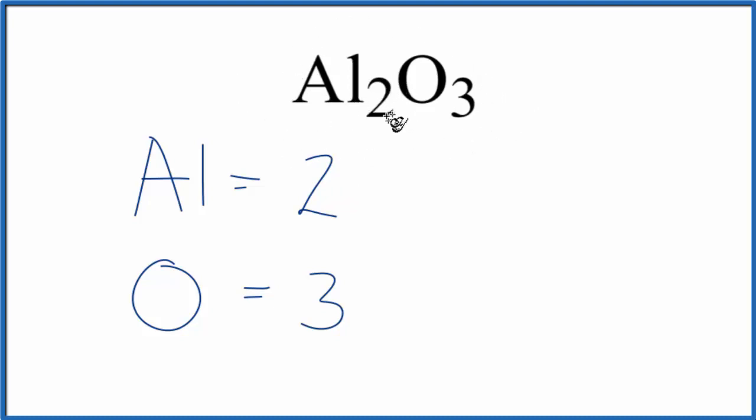If you were asked to figure out how many, say, oxygen atoms there were in one mole of aluminum oxide, you would just take the three and multiply that by Avogadro's number.